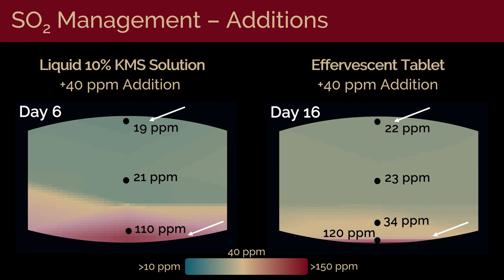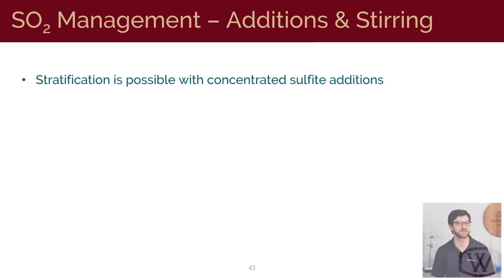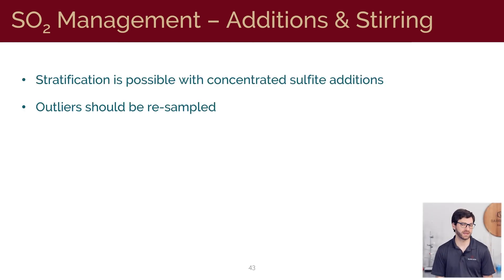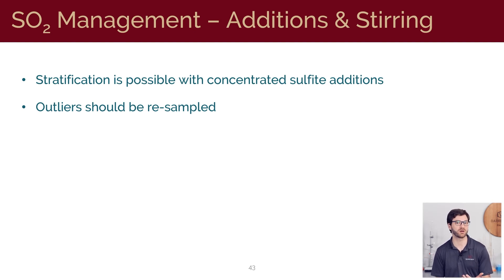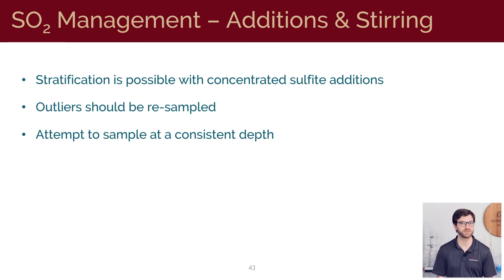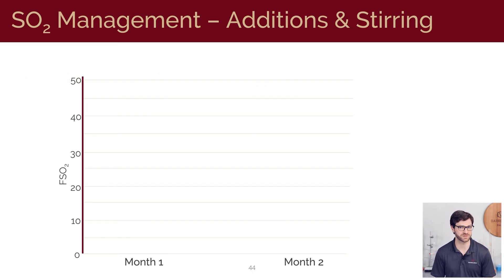Imagine sticking a wine thief at the top versus into the middle — it might make a difference of 10 or 20 ppm to your measurement. What we can learn from this simple experiment is that stratification is possible when concentrated sulfites are added to a barrel. If you sample and analyze a barrel for free SO2 and see an unexpected reading, you could consider resampling at a different depth to discern if this is a problem of stratification, and attempt to sample at a constant depth between barrels so that you can make an apples to apples comparison. Stirring barrels after an addition does indeed prevent the stratification from forming.